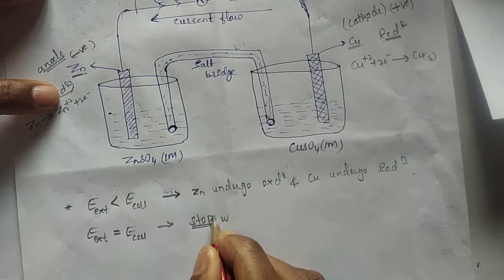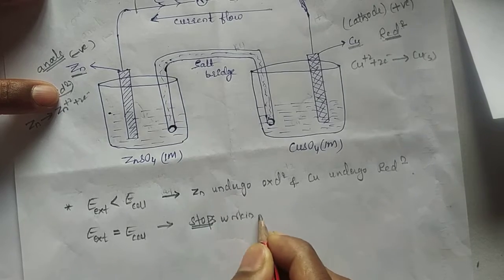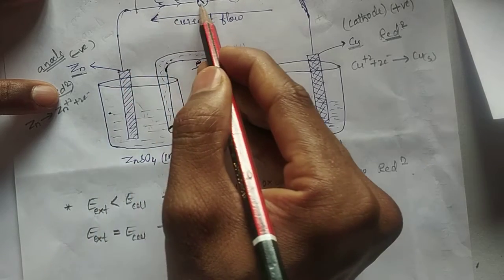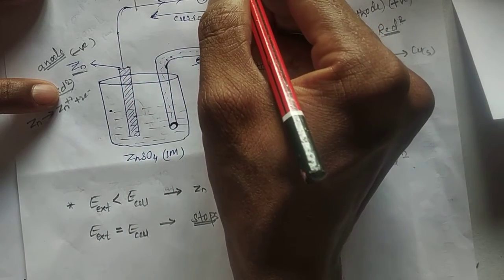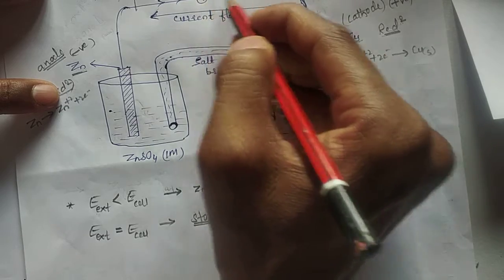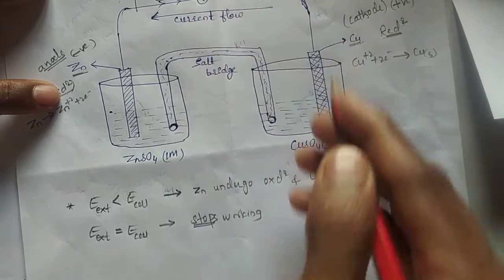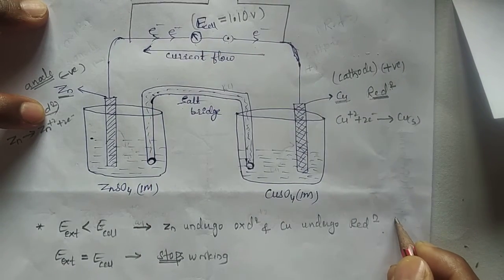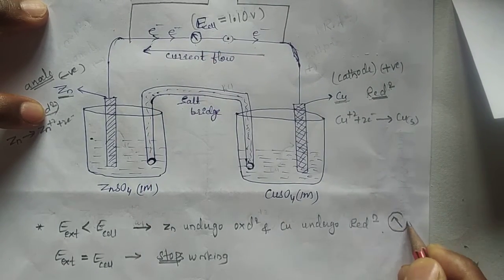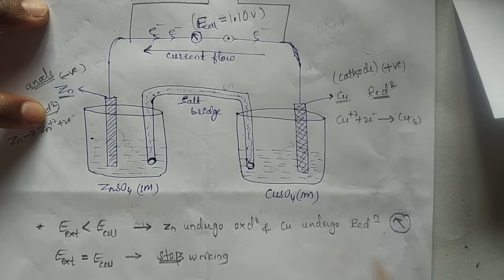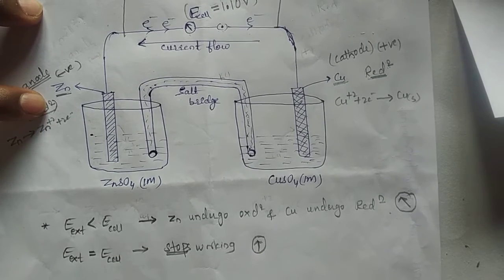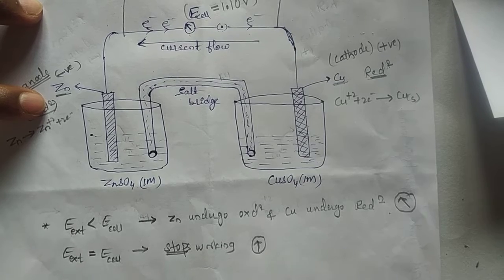When the external opposing potential becomes equal to the cell potential, the Daniel cell stops working. It does not work because the electrons flowing from one side are equal to the electrons coming from the other side in the opposite direction. Both sides have equal electron flow, so the current stops.